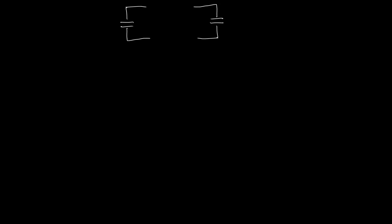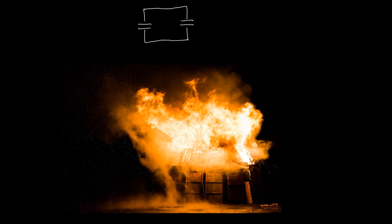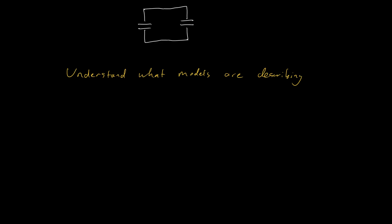So what happens when two capacitors come face to face with each other? Where does the missing energy go? One answer is that there is a big explosion — but there's actually a very nice mathematical answer. The moral of the story is to understand what models are describing. In our case we have been using lumped circuit models, and for our energy calculations we're assuming steady state. If we go back to the physics, just prior to the capacitors being brought together, we have lots of charge on the left and no charge on the right.